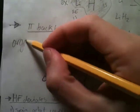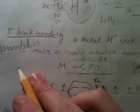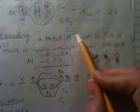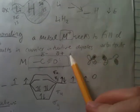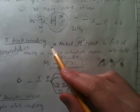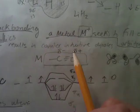Another interesting, experimentally observed bonding concept is pi backbonding. This is especially fascinating in organometallics, which I highly recommend. This happens when you have a metal M+, and it presents some counterintuitive ideas.